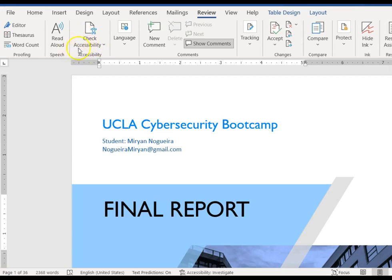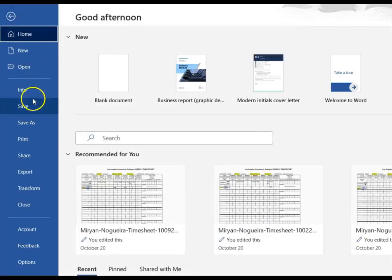It is best to start with an accessible source document in Microsoft Word. Then, you will save that as a PDF.